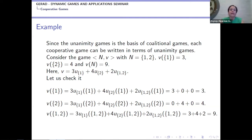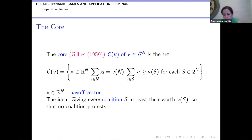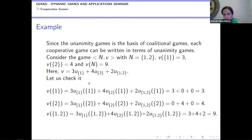For example, for V(1): one is a subset of one, so we take the value three. But two is not a subset of one, so we take zero. Similarly for other coalitions. Equality is also included in the subset notation. The core is one of the central solution concepts in cooperative games. It is a set-valued solution concept, and for n-person games it is generally a polytope. A payoff vector x must satisfy the efficiency condition — the sum of payoffs equals V(N) — and the coalitional stability condition: the sum of x_i for i in S must be greater than or equal to V(S) for every coalition S.